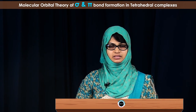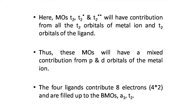Now we shall study how the 8 electrons provided by the 4 ligands are filled. The first level, A1, accommodates 2 electrons from both the ligand and the metal. The next symmetry, T2, accommodates 6 electrons. Therefore, the 8 electrons are filled up to the T2 bonding molecular orbital level. From a crystal field theory perspective, the electrons previously in the metal d orbitals are now distributed between the anti-bonding E orbital and the T2* anti-bonding molecular orbital.